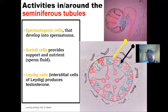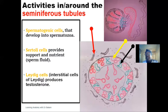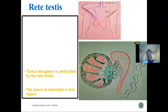The third type of cell is not found within the seminiferous tubules but in the interstitial tissue of the lobules. These are the Leydig cells, and they are responsible for the secretion of testosterone. This reflects the dual function of the testes: reproductive function through the production of spermatozoa, and endocrine function through the secretion of testosterone.